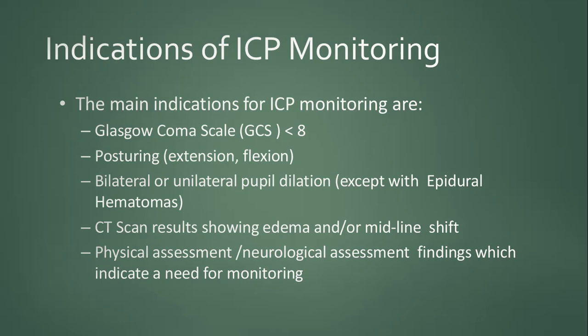Indications for intracranial pressure monitoring include a low GCS score below 8, different posturing such as decorticate and decerebrate postures, bilateral or unilateral pupil dilatation, CT scan results showing edema or midline shift, and physical or neurological assessment findings indicating a need for monitoring.